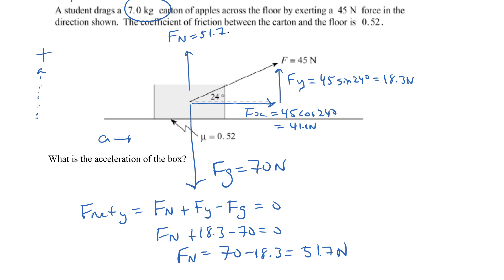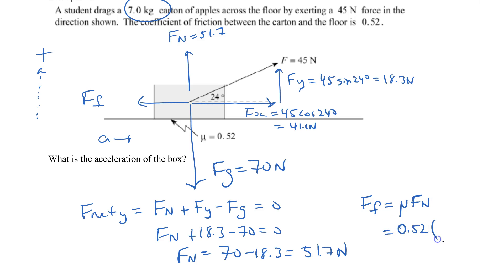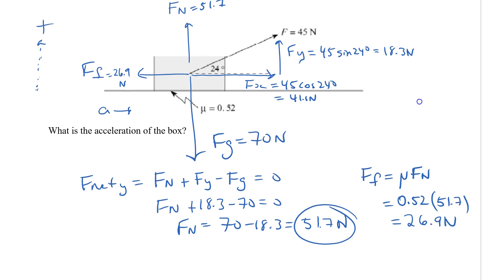The person is dragging the carton to the right, so friction acts to the left. Friction equals mu times normal force: 0.52 times 51.7, giving a friction force of 26.9 newtons.